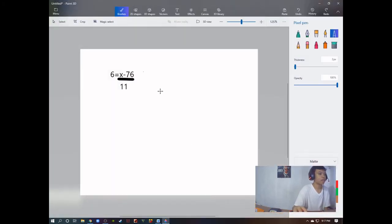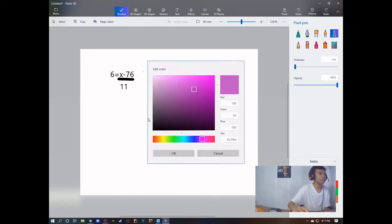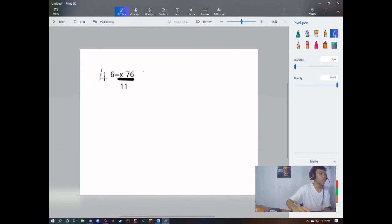First, 6 equals to x minus 76 over 11. We're going to multiply it by 11. 11 times 6 and 11 times 11. We're going to cancel it and 11 times 6 is 66.